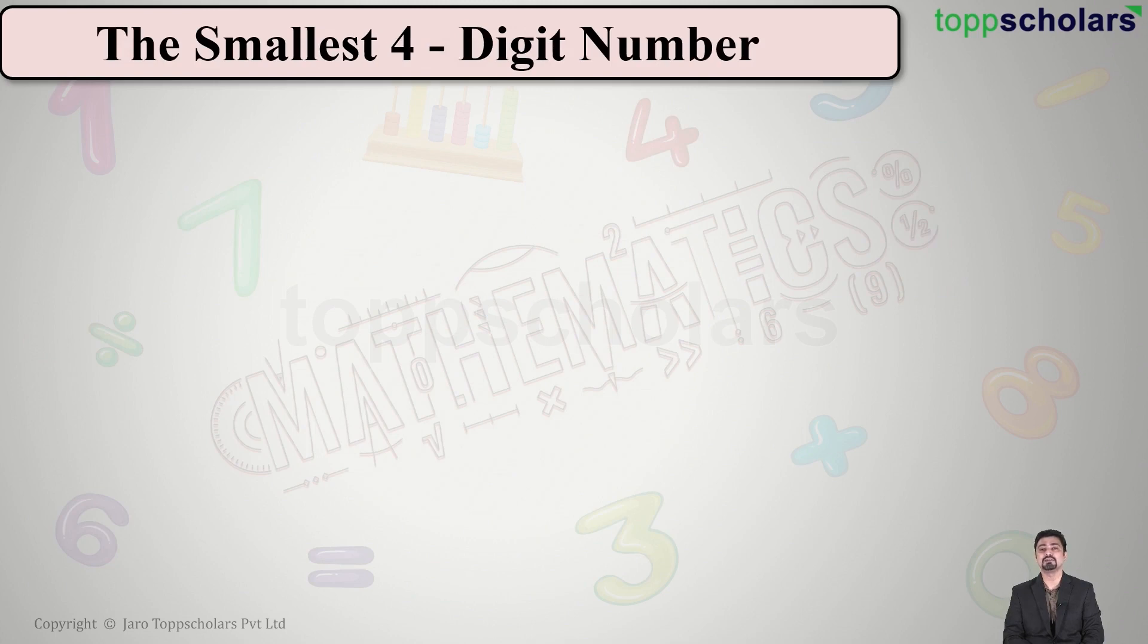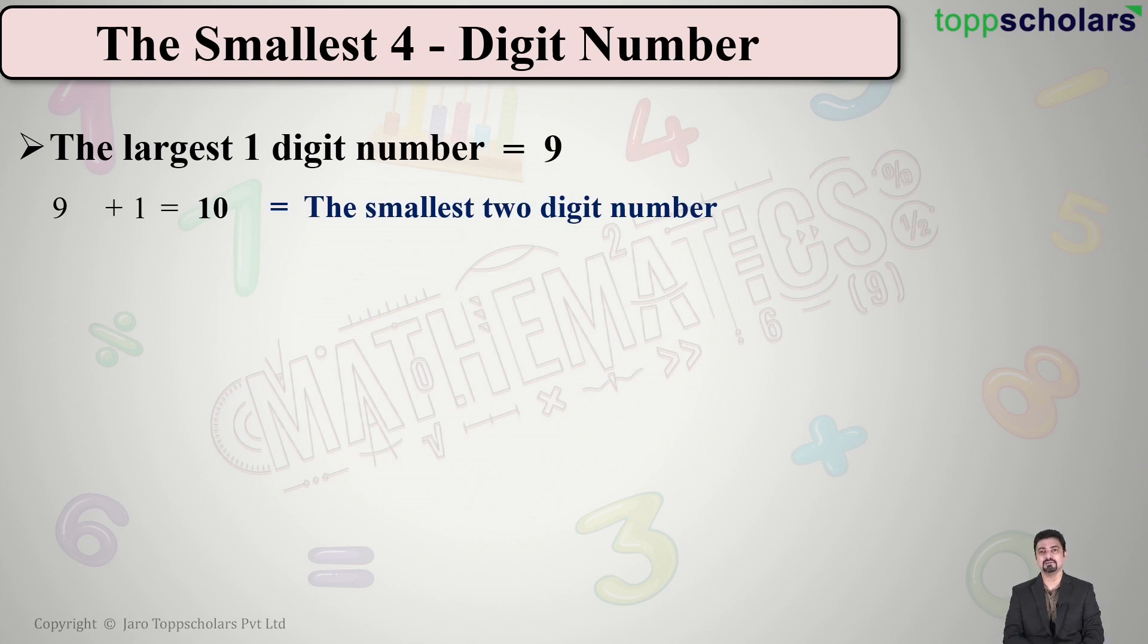So we'll first look at the smallest four-digit number. Students, you know that the largest one-digit number is nine. If to this nine I add one, so 9 + 1, the answer will be 10. What is 10? It is the smallest two-digit number.